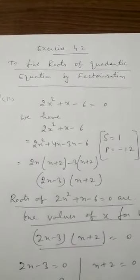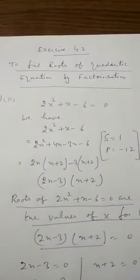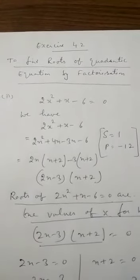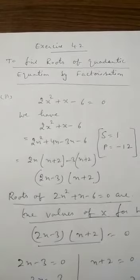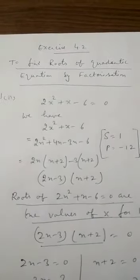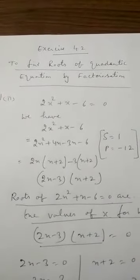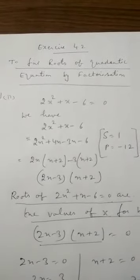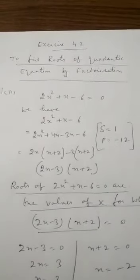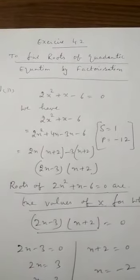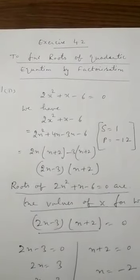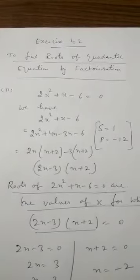So the middle term will be split as plus 4x minus 3x. Now we have 2x squared plus 4x minus 3x minus 6. This is the splitting of the middle term. After taking common, the factors are 2x minus 3 into x plus 2.